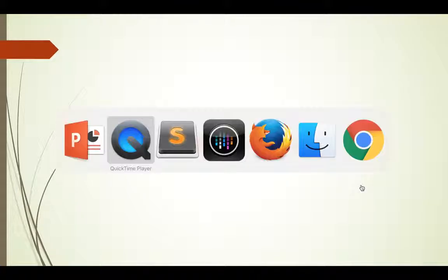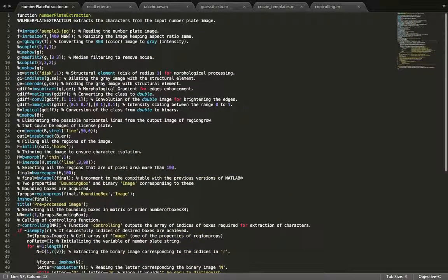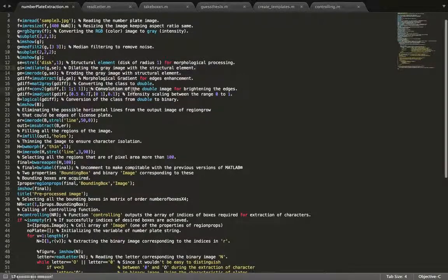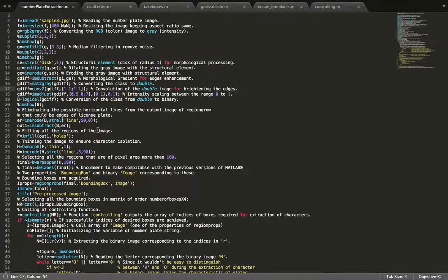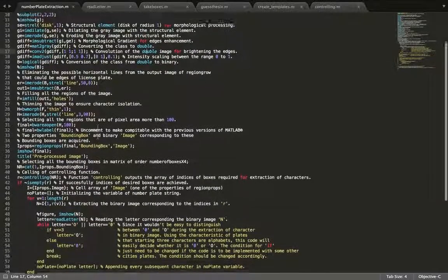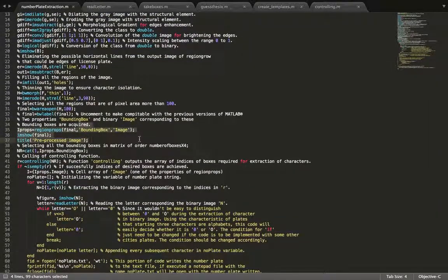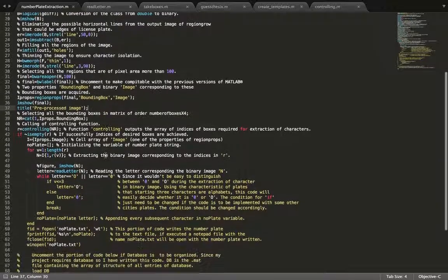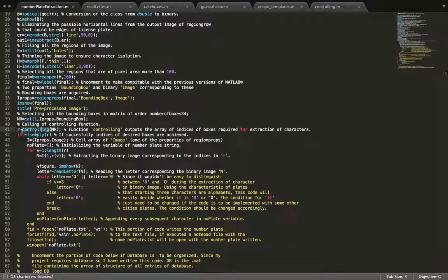Let's go to the code. This is my main function, numberplateextraction.m. Here, like I've said, I've converted it into RGB and then I've done morphological pre-processing on this, and then here I have convoluted it and various other things. Here I created bounding boxes for each character and then called a controlling function which is in a separate file.